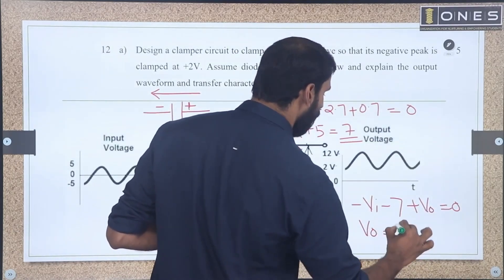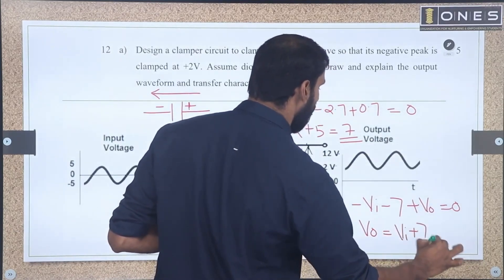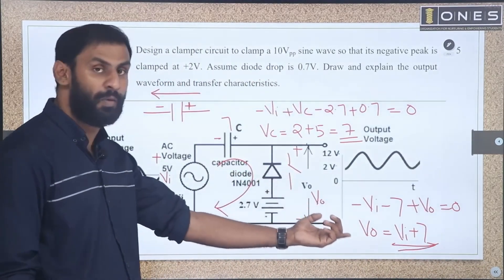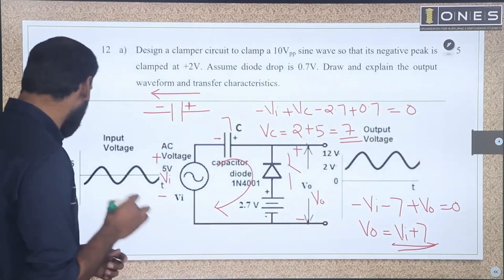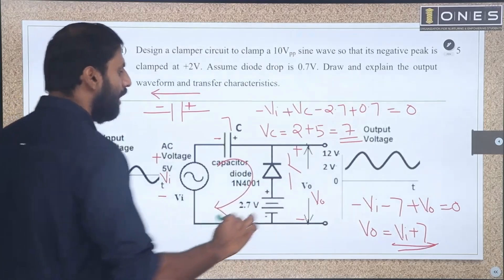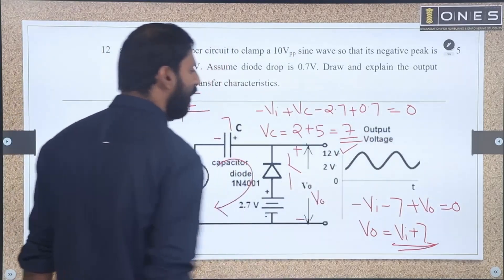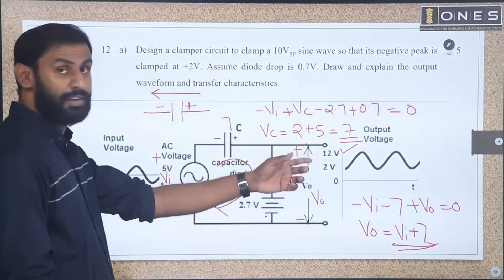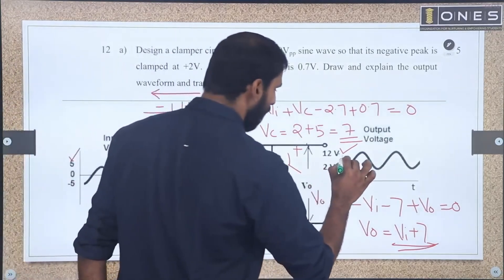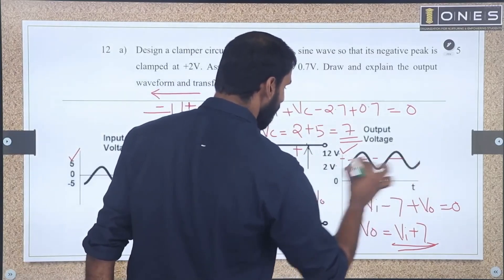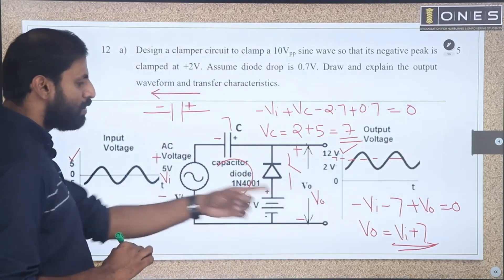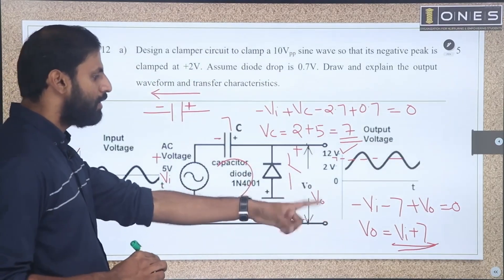During the positive half cycle, the diode is open circuit. Applying KVL, the output equals Vi plus 7. That means for every input value, we add 7 to get the output. When the input is at its reference of 0 plus 7, the output is shifted. The negative peak was minus 5, so minus 5 plus 7 equals 2 volts at the output.